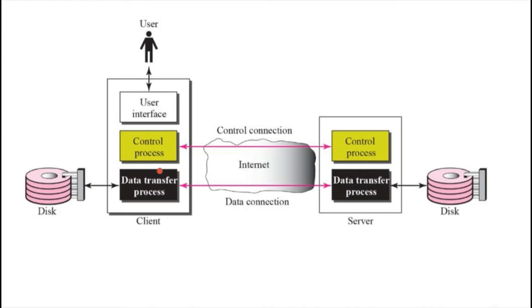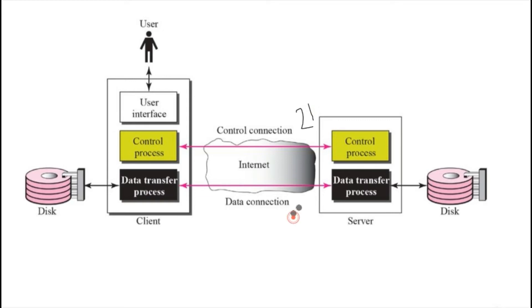After the control connection has been made, the data transfer process runs. The data transfer process makes a data connection with the data process on the server. This connection is used for data transfer between the client and the server. The control connection is made at port number 21 on the server, and the data connection is made at port 20 on the server.